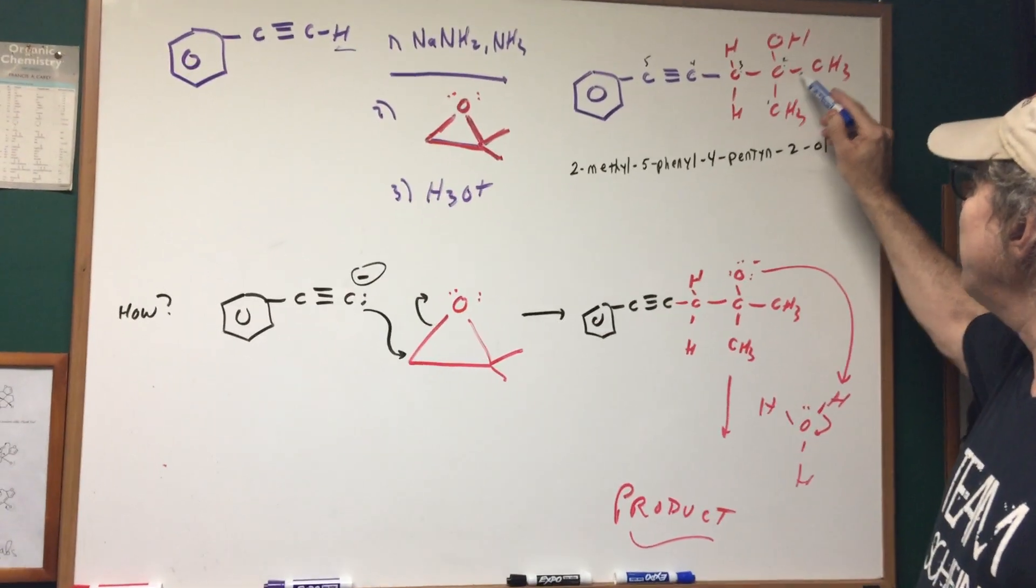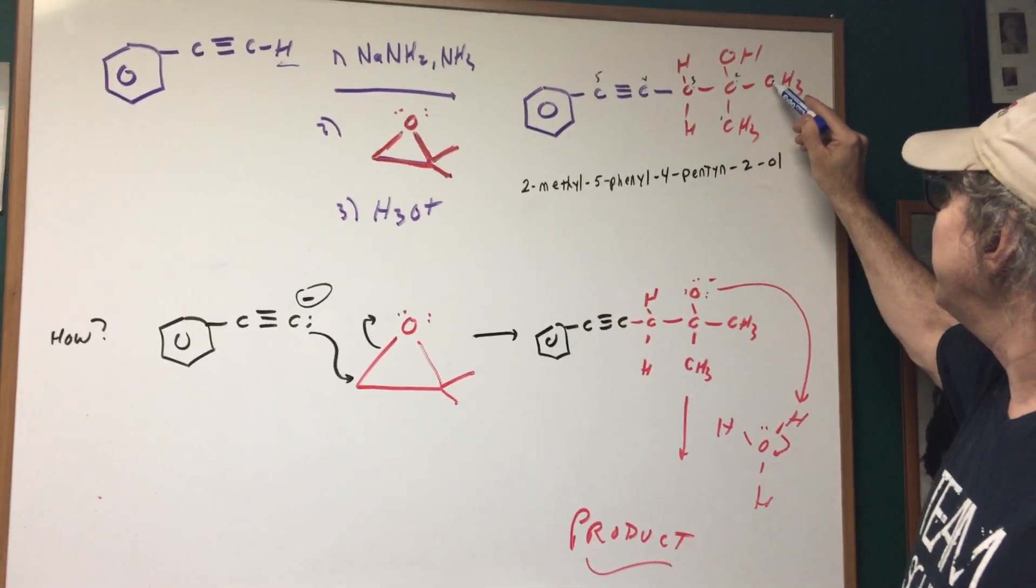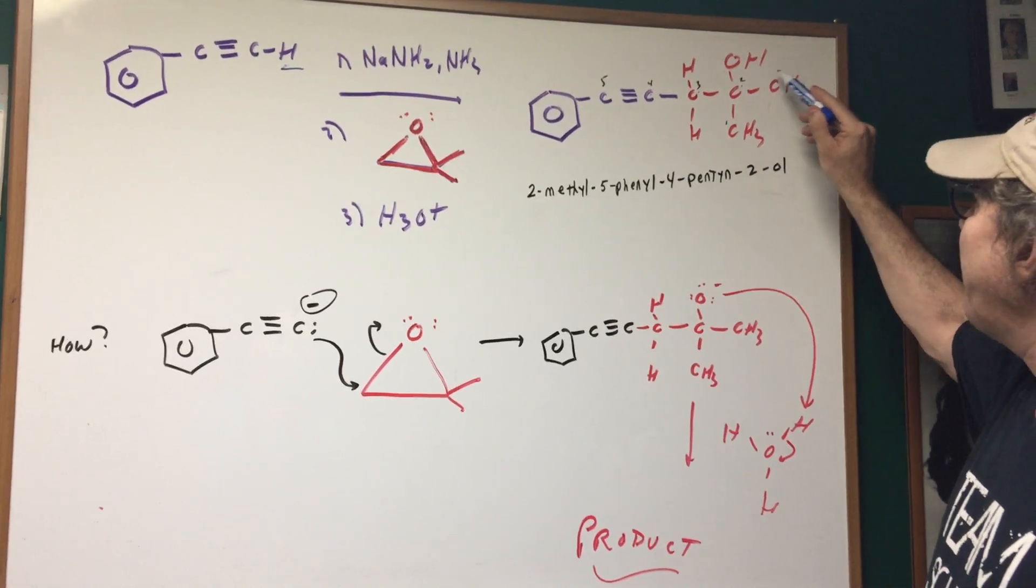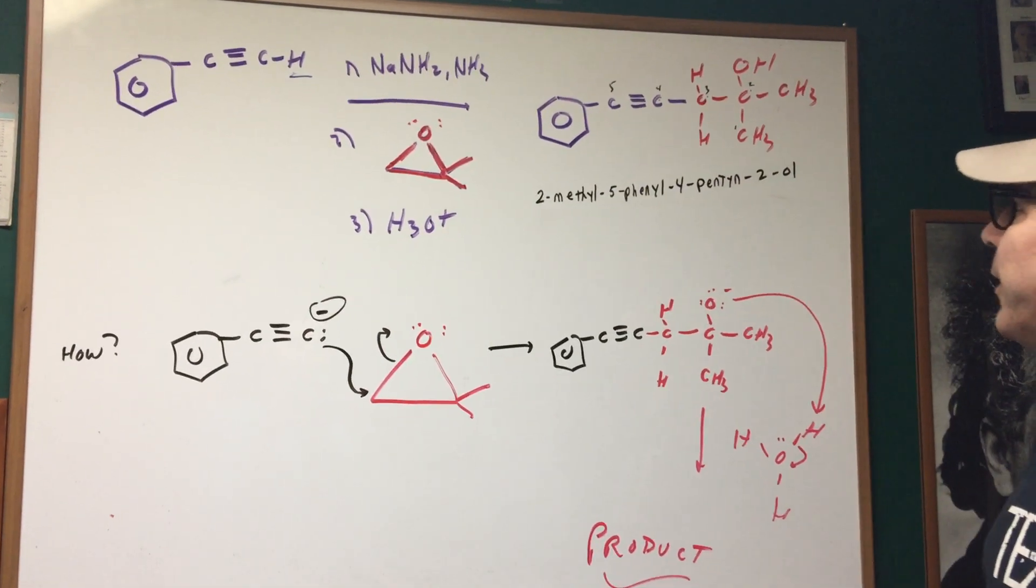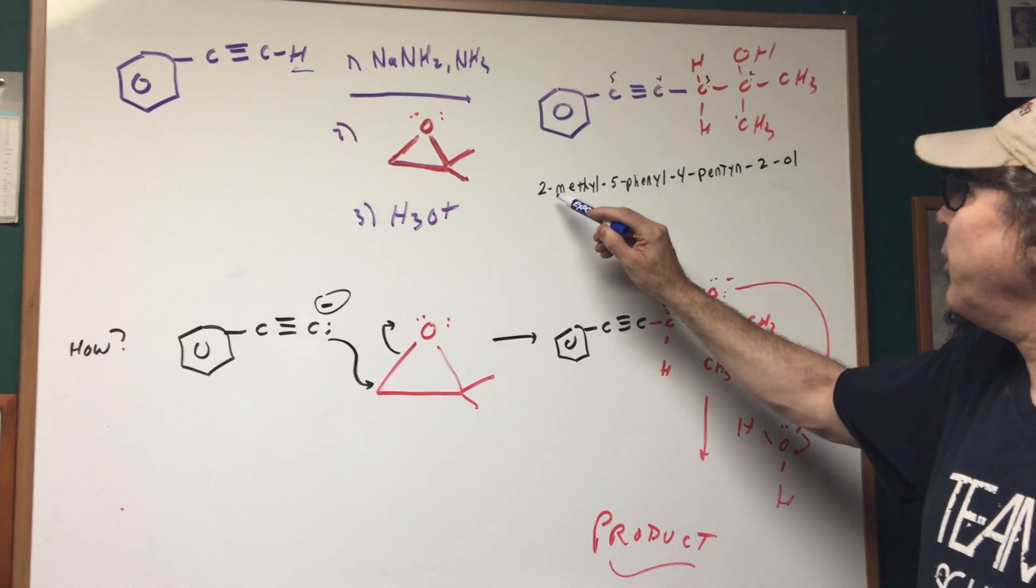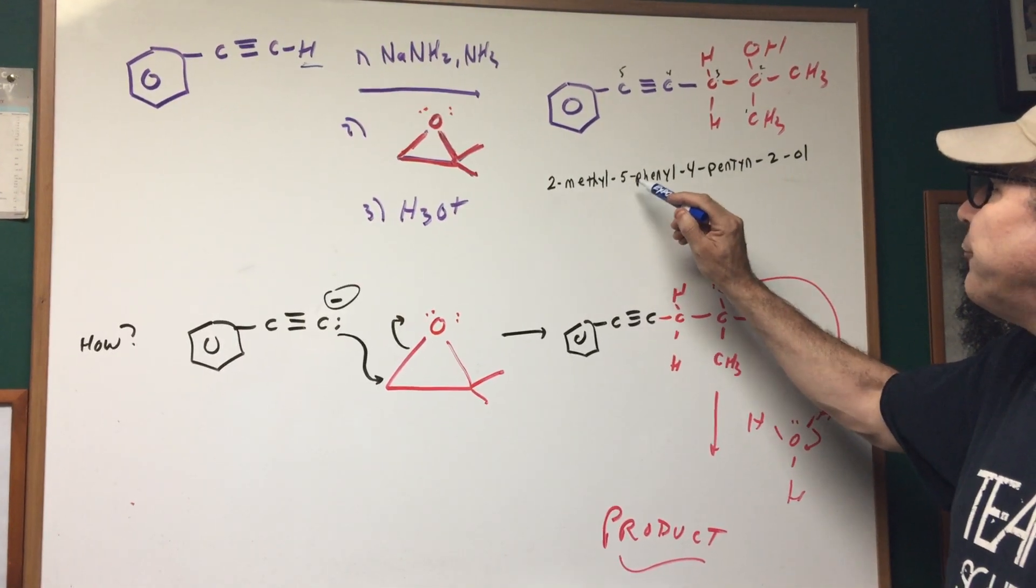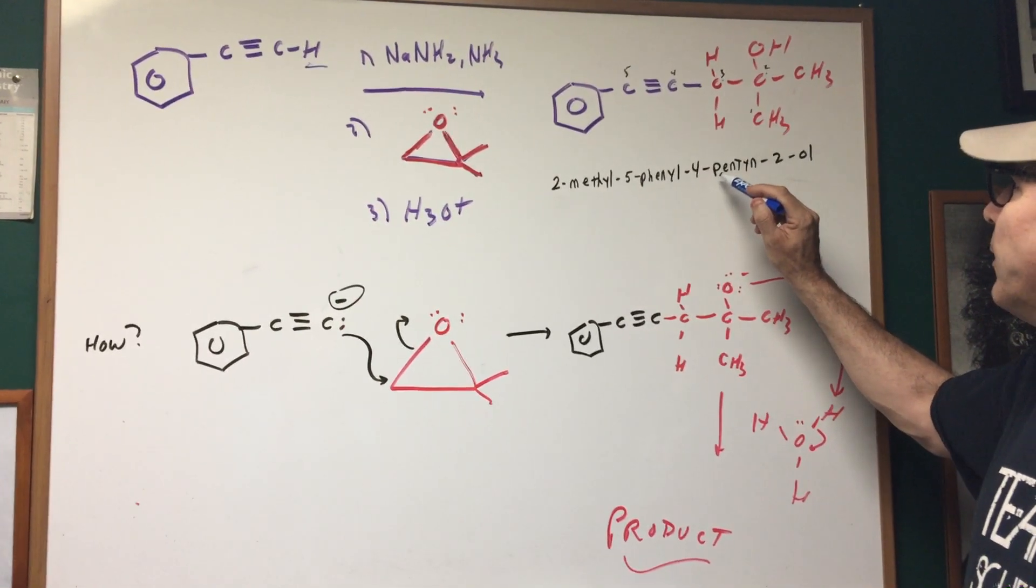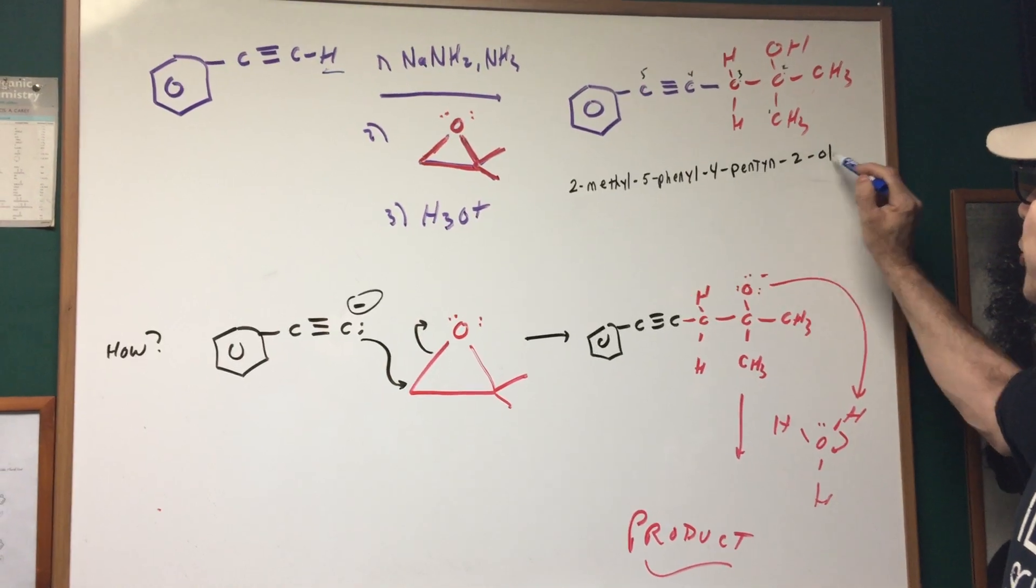But you can see that number two is going to contain a methyl and number five would contain a phenyl. So we put it together and we would get two methyl, five phenyl, four pentine, two oil.